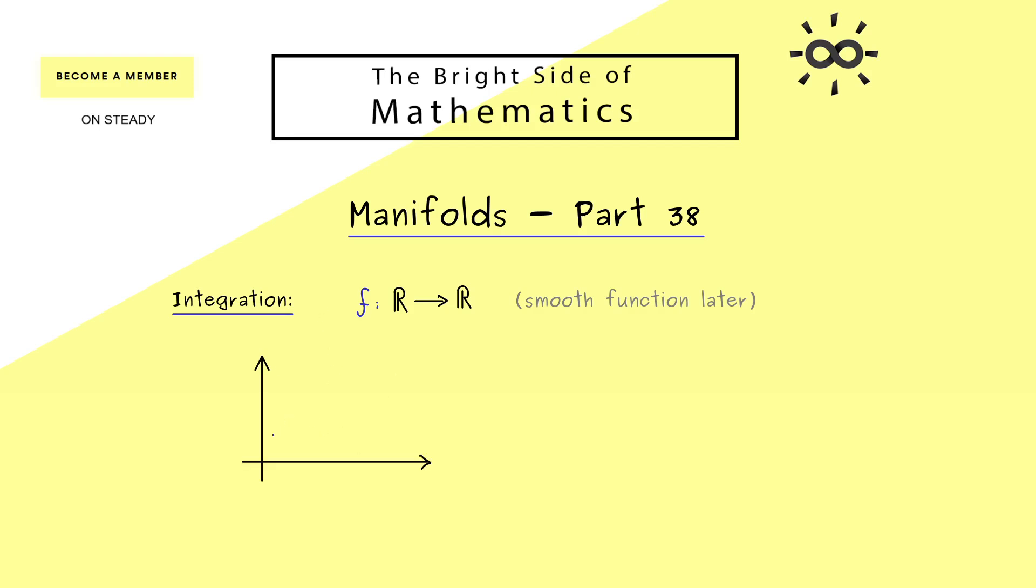However, this property is not needed to have the one-dimensional integration. And for the integral we have a nice visualization if we consider the graph of the function f. One possibility is the Riemann integral approach, where we approximate this area below the x-axis and the graph of the function f by rectangles. And by making the rectangles finer and finer, we will reach the whole area here in the limit process. In other words, what we get out is the integral of f, and the common notation we have for that is the integral symbol f dx.